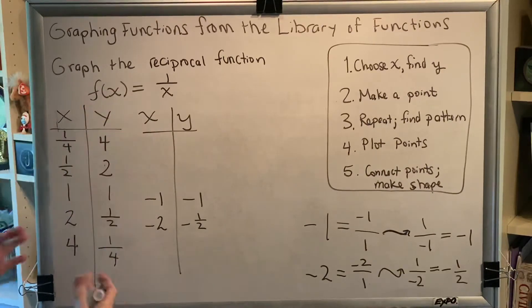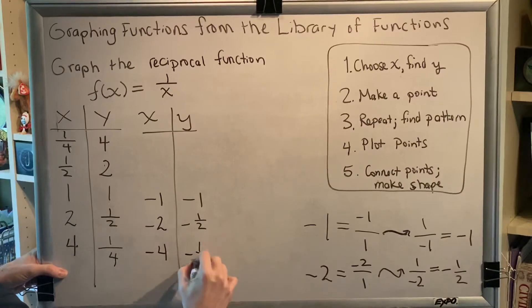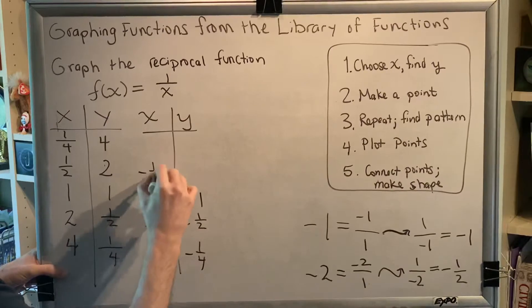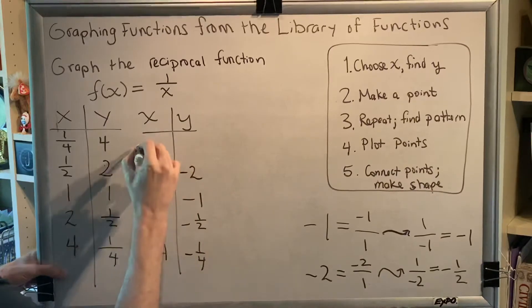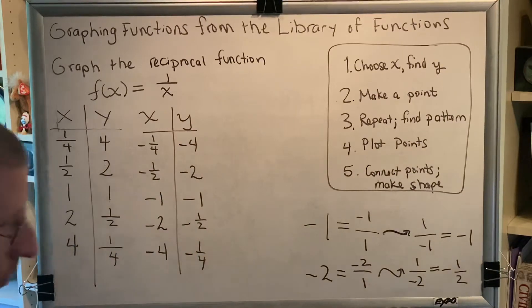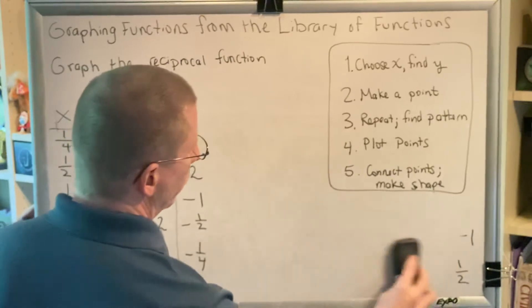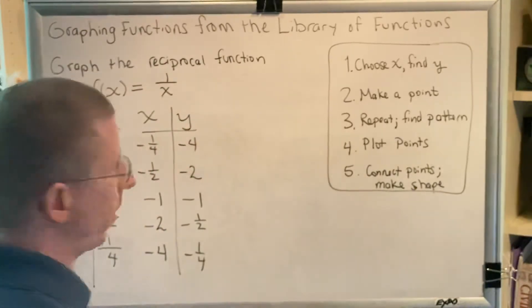And, that allows us to fill in this entire table. Just change all of these numbers to their negative versions. So, negative 4, negative 1 fourth, negative 1 half, negative 2, negative 1 fourth, negative 4. Okay, with that in mind, we are now ready to create the graph. So, let's do that.